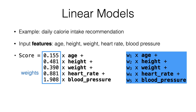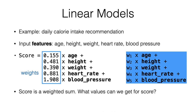In neural networks, you're going to try to adjust those weights to make the model better and better. The score is a weighted sum. It's worth thinking about: given this form of linear model, what are the possible values we can get for the score? All the variables in this example are going to be positive values — age, height, heart rate — and the weights happen to also be positive.